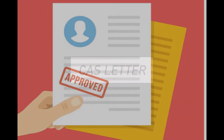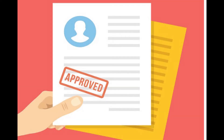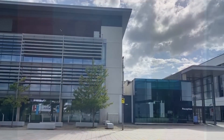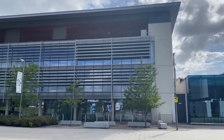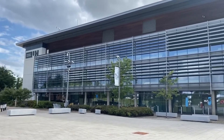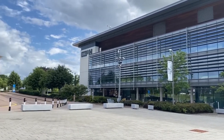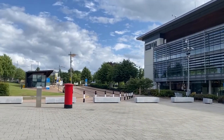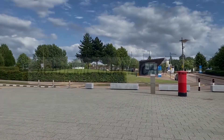You need a CAS letter from the UK government, which is known as Confirmation of Acceptance for Studies. This is perhaps the most important paper to get the visa. You will receive this from the university. To get the CAS letter, you need to upload documents with your application. I will tell you one by one.